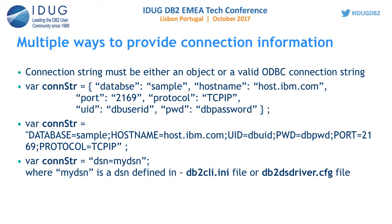For connectivity, the connection string is the basic thing. There are three ways this driver accepts a connection string. The first is the object form, since Node.js works naturally with objects. You can provide basic keywords like database name, hostname, port, protocol, user ID, and password — the most basic keywords and values required for a connection. You can add other keywords as needed.